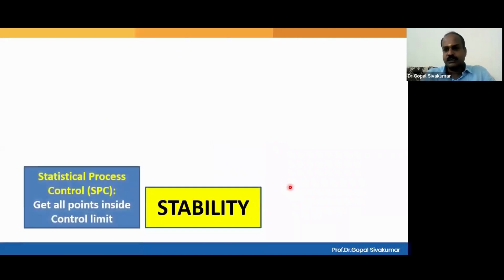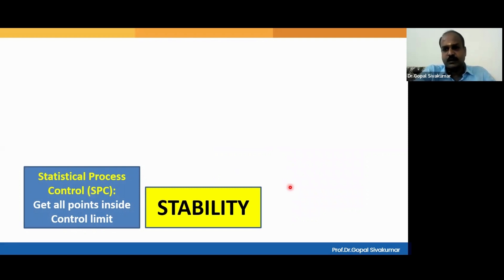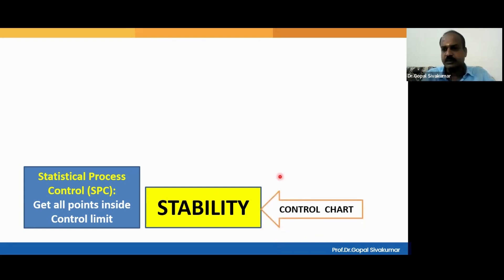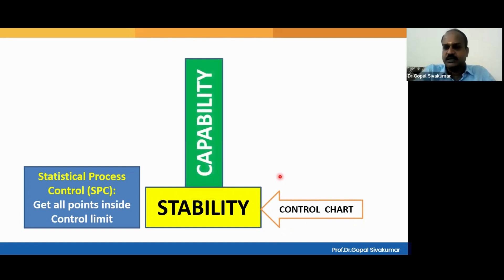If a process is struggling for stability, your goal should be to stabilize the process. Under such a situation, don't try to improve the process and don't make any changes. Rather, try to stabilize the result by standardizing the process, standardizing the input, and standardizing the procedures. Do all those things to standardize the process — then you will start getting all the process outputs falling within the control limit. That is called stabilizing. Stability is the foundation for improvement. Once stability is ensured, you can proceed and improve the capability of the process.